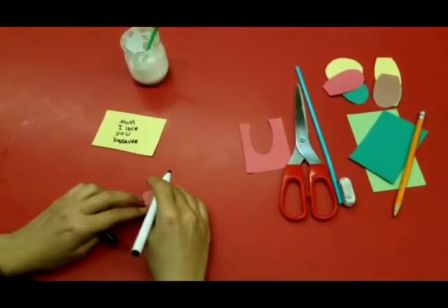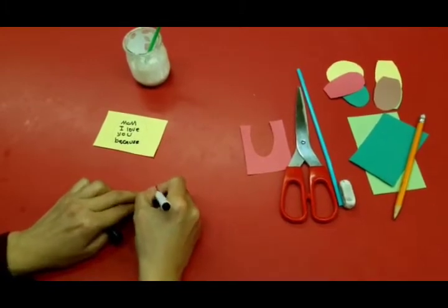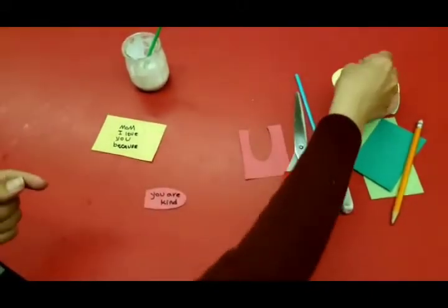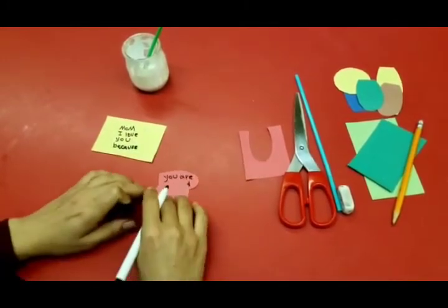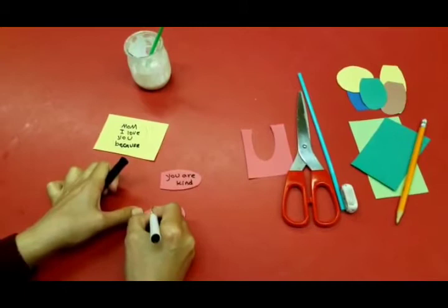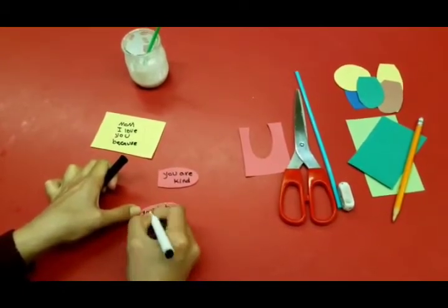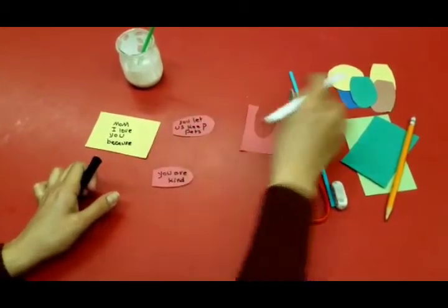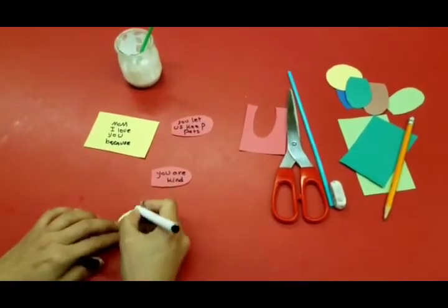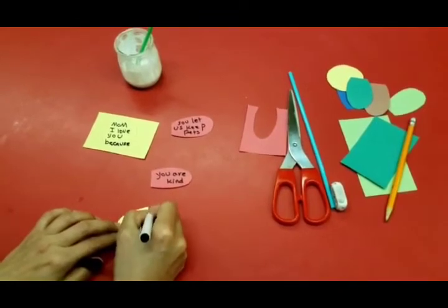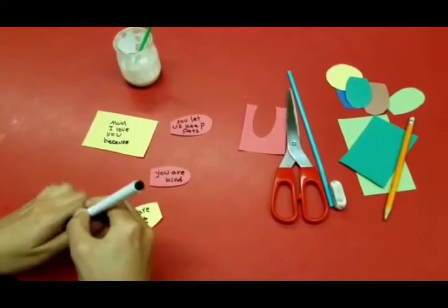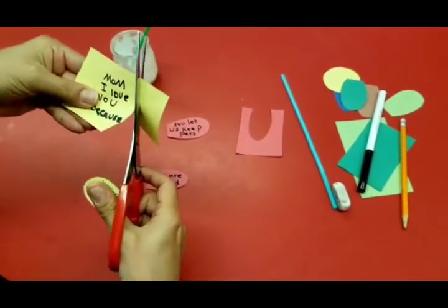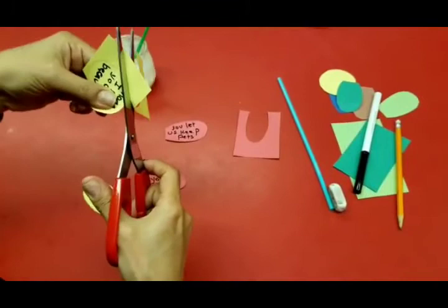You can write down 'Mom, I love you because you are kind,' 'I love you because you let us keep pets,' 'I love you because you are cool.' So you can write whatever you want to tell your mommy. And then you can just cut out your full circle.